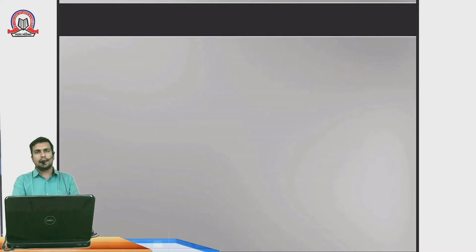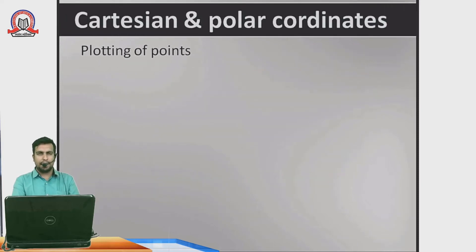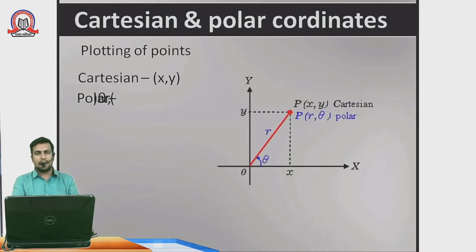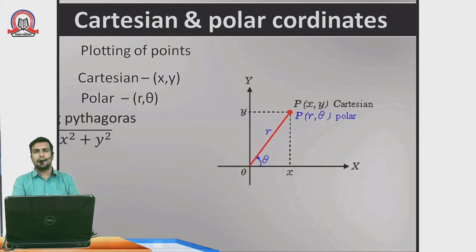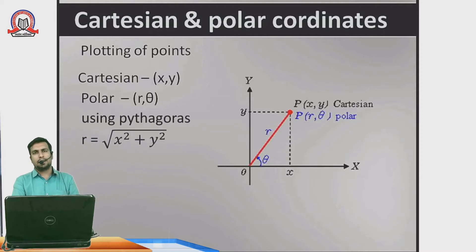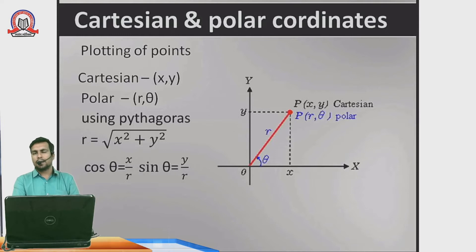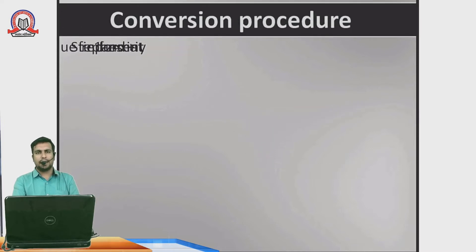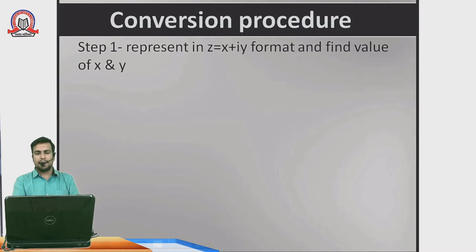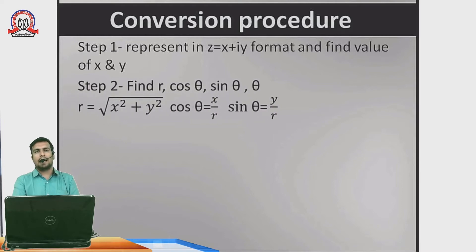Last time we covered Cartesian to polar conversion. A brief revision: a point (x, y) in Cartesian form is represented in polar form as (r, θ). The formula for r is √(x² + y²). Then cosθ = x/r and sinθ = y/r. We also saw the conversion procedure: represent z = x + iy, find the values of x and y, then compute r, cosθ, sinθ, and θ.